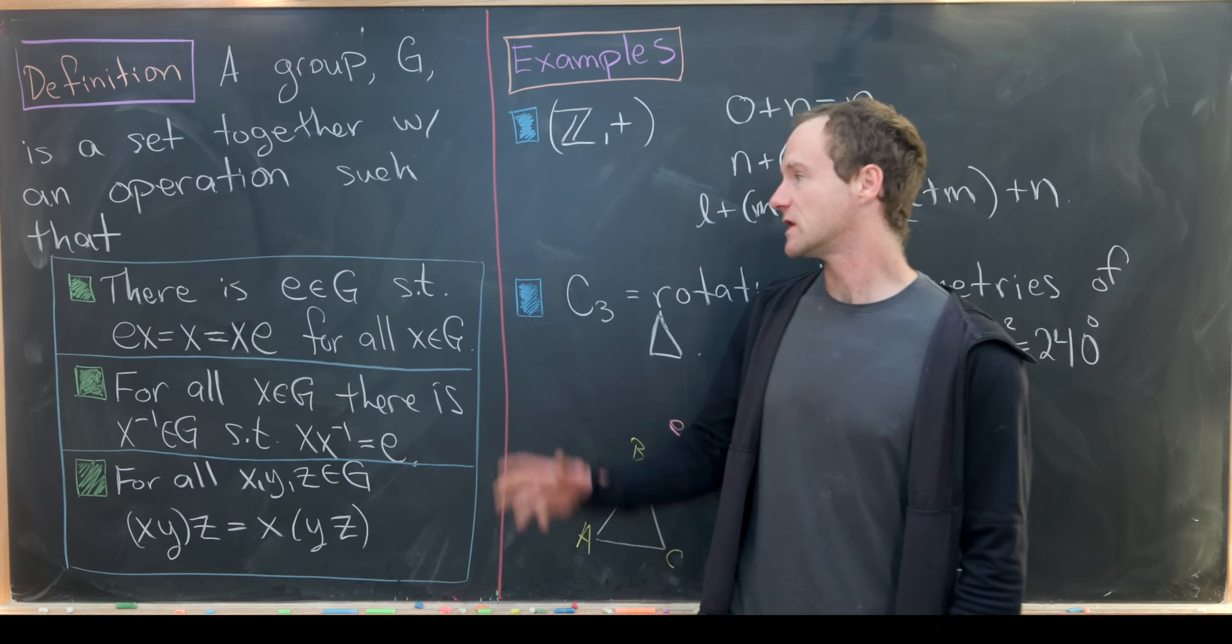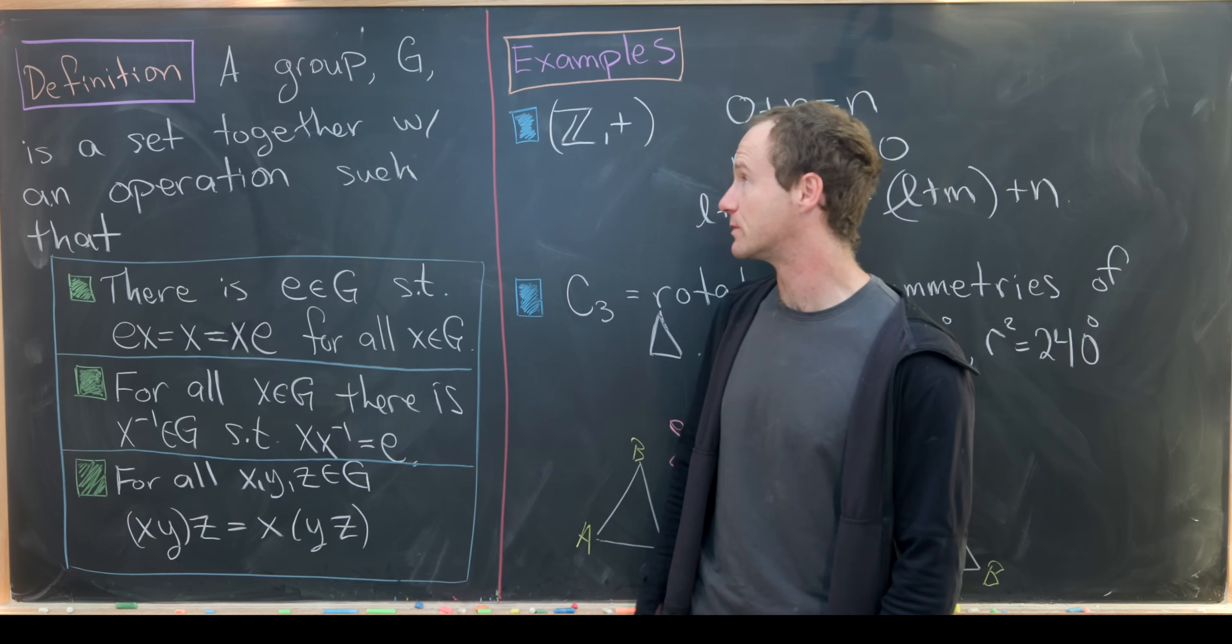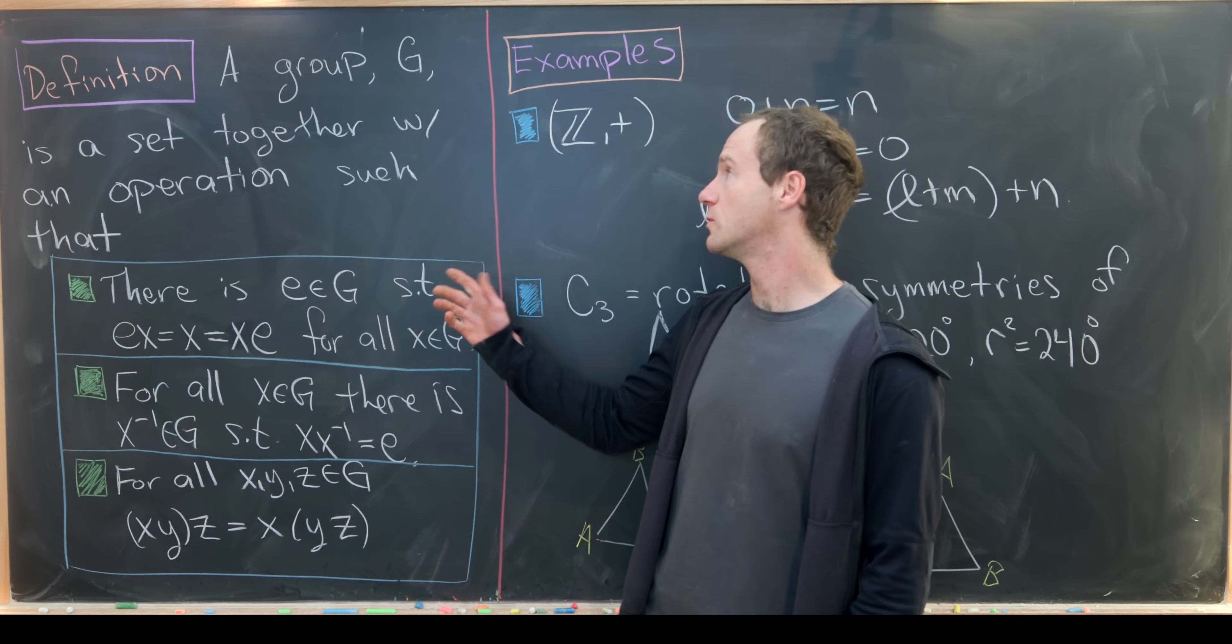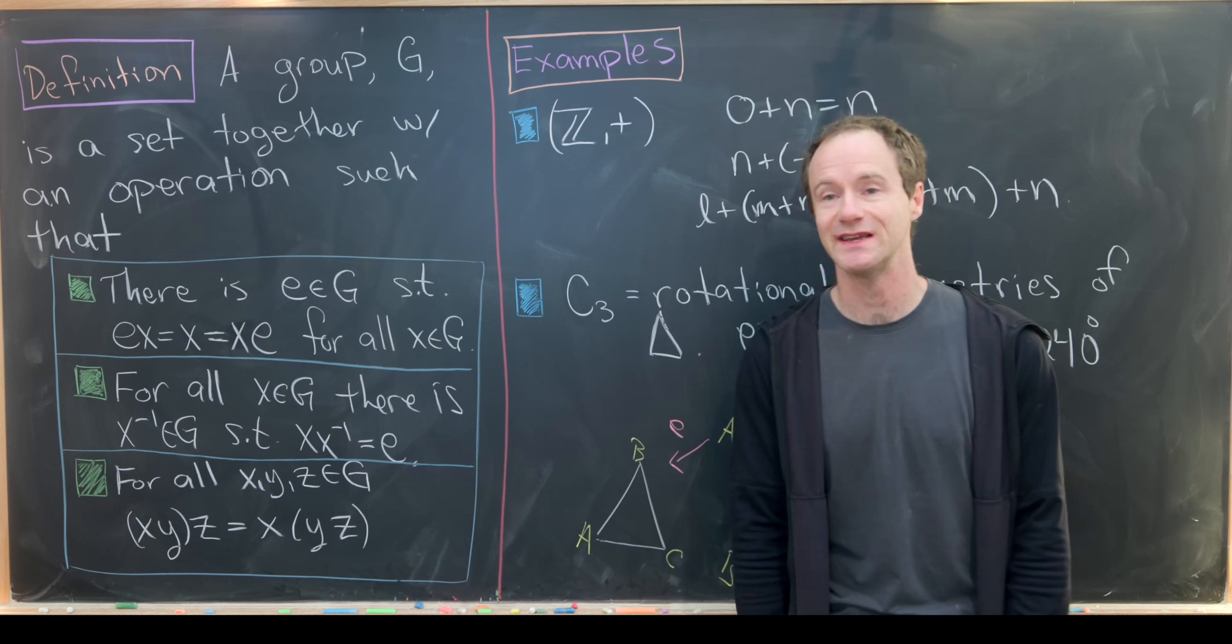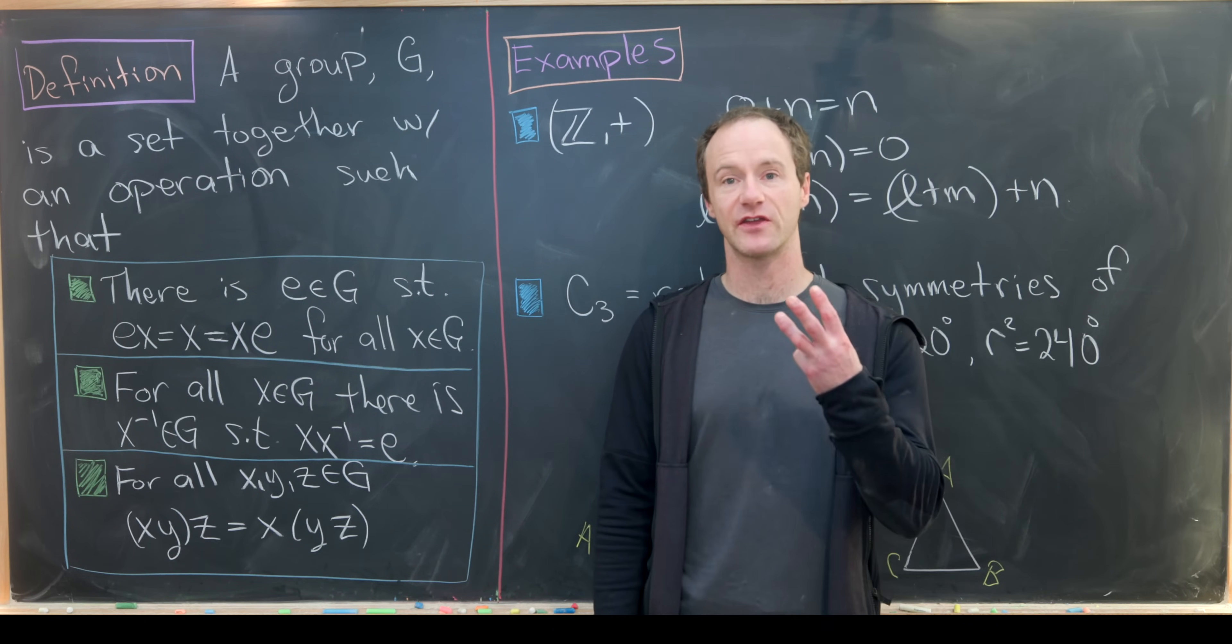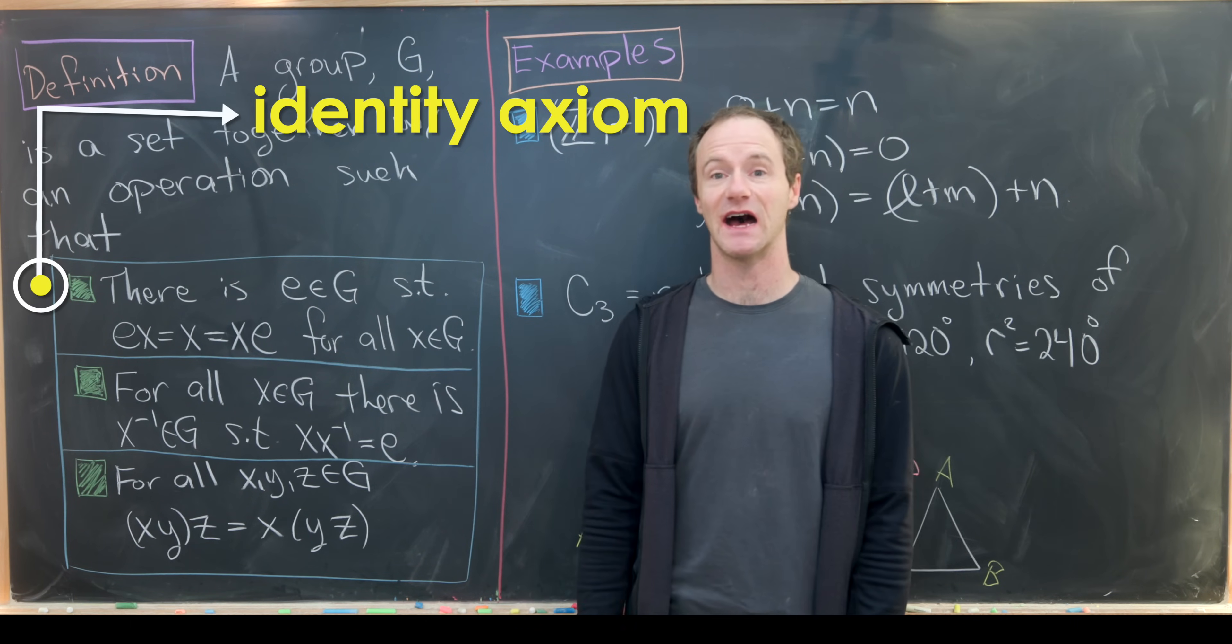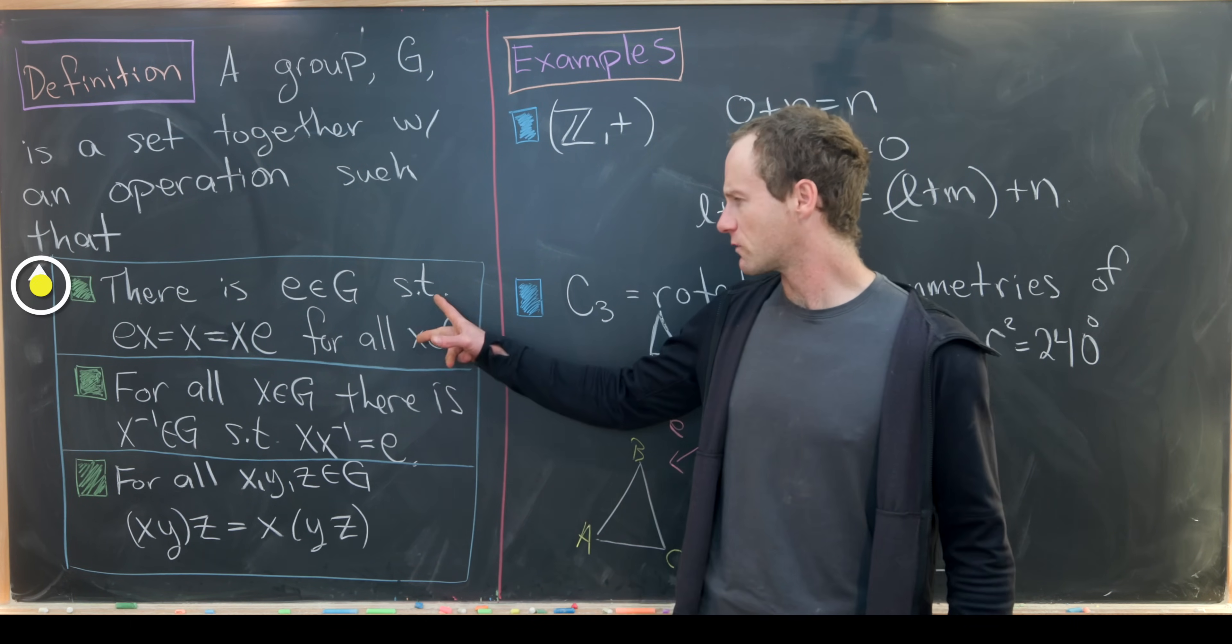So to get started, let's review the definition of a group and look at some basic examples. A group, which we'll generally call G, is a set together with an operation satisfying three axioms. The first axiom is there is an identity element E in G such that EX equals X equals XE for all X in G.